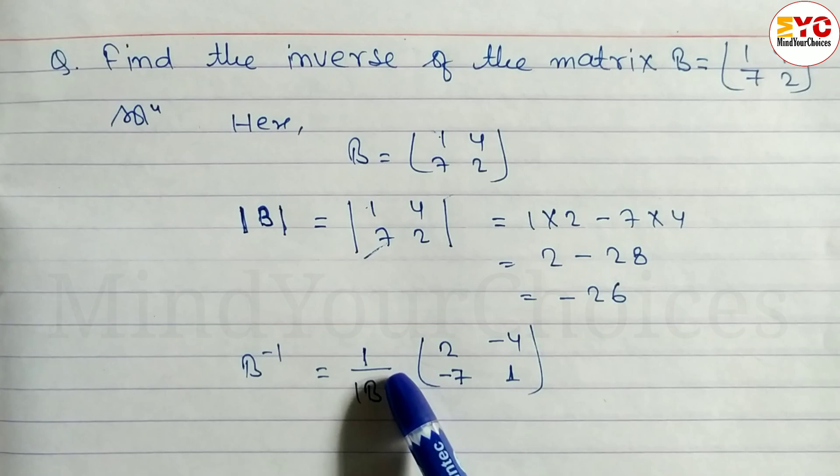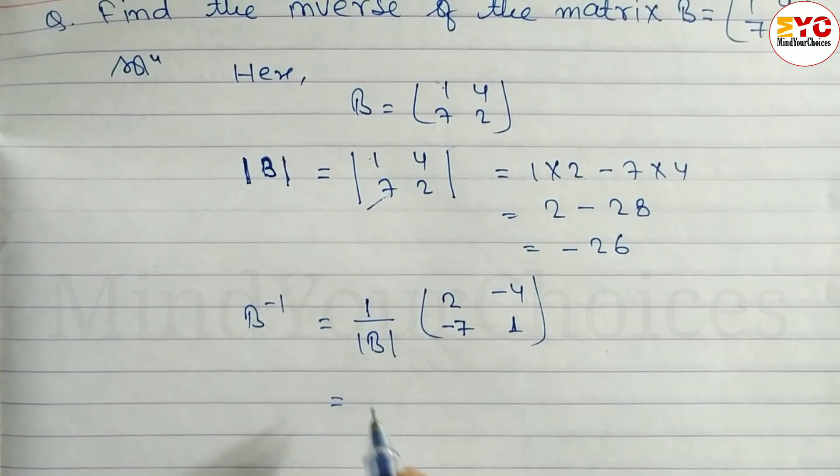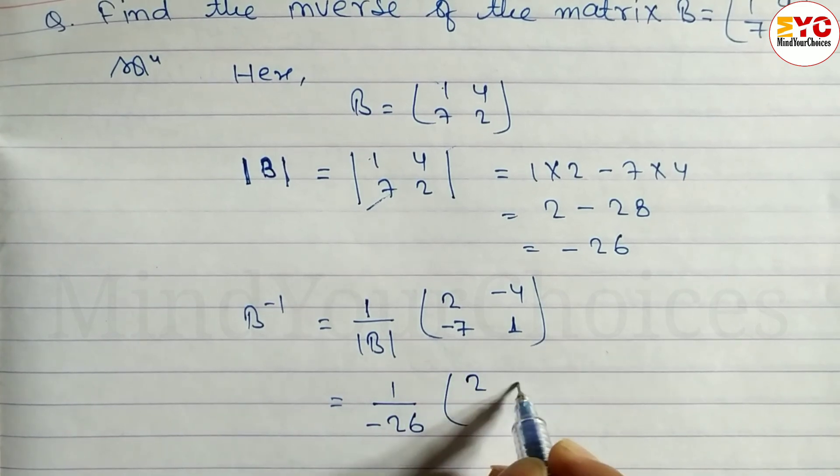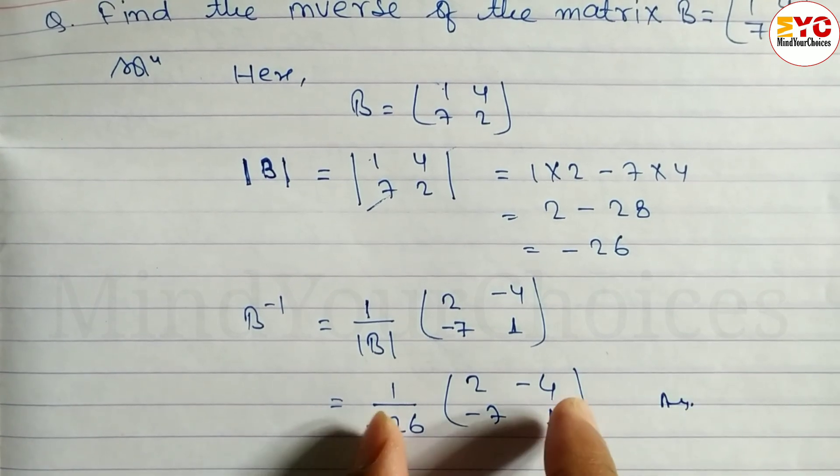The determinant of B is minus 26, so we can write: 1 over minus 26, times the matrix [2 -4; -7 1]. This is the answer. You can multiply this too or leave it as is.